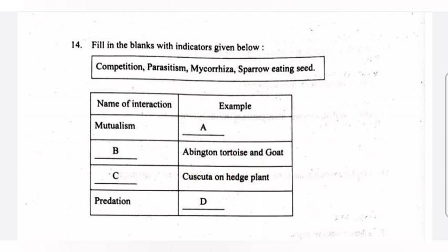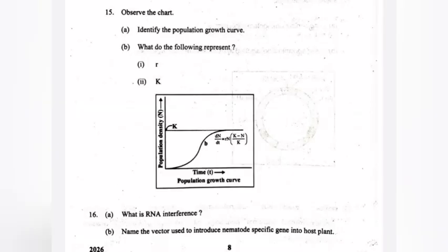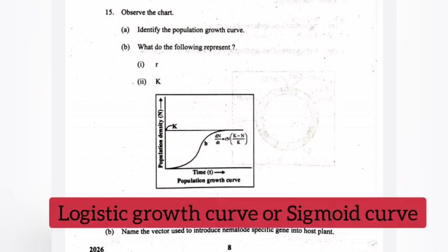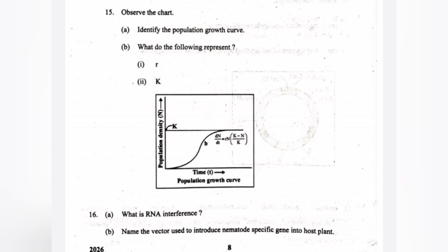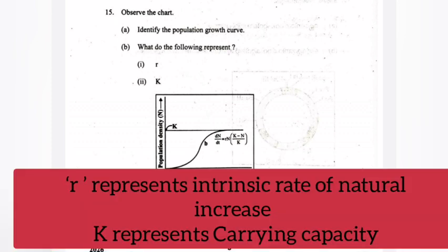Question 15: Observe the chart. A - Identify the population growth curve. Answer: Logistic growth curve. B - What do the following represent? 1) small letter r, 2) capital letter K. Answer: Small letter r represents intrinsic rate of natural increase. Capital K represents carrying capacity.